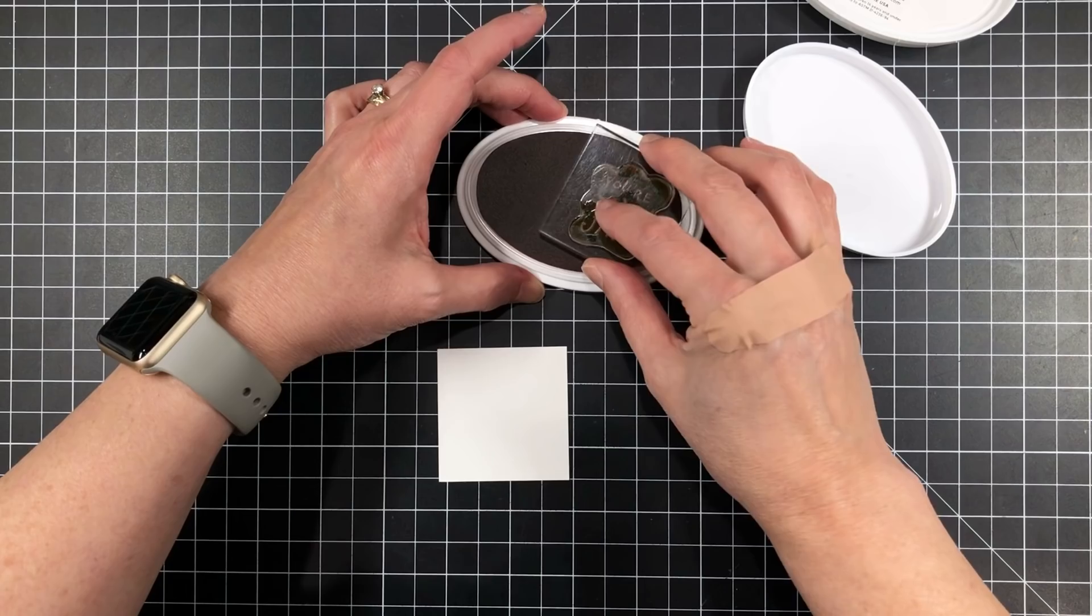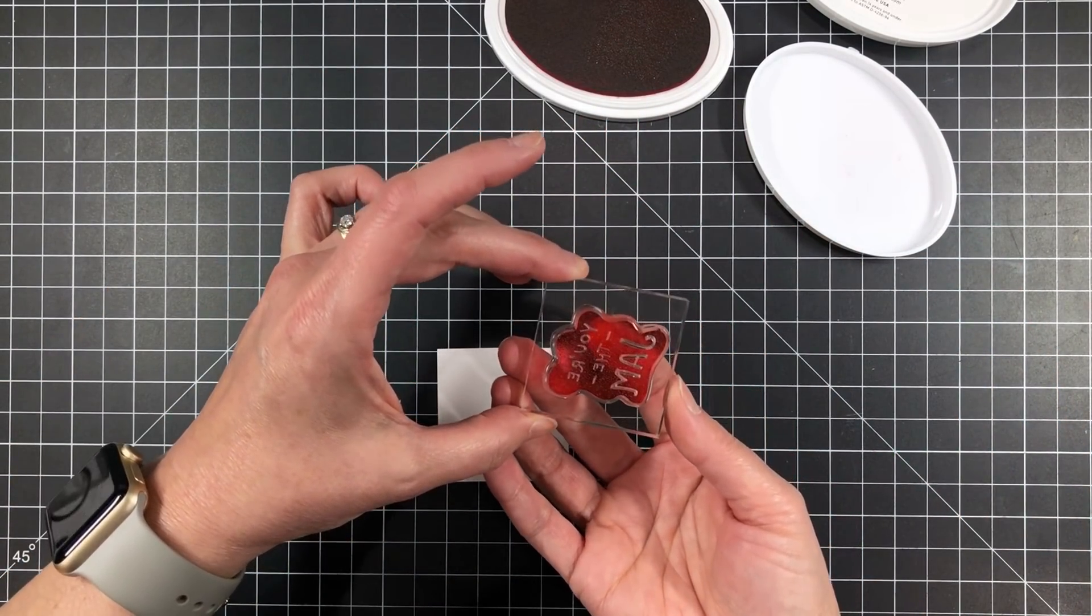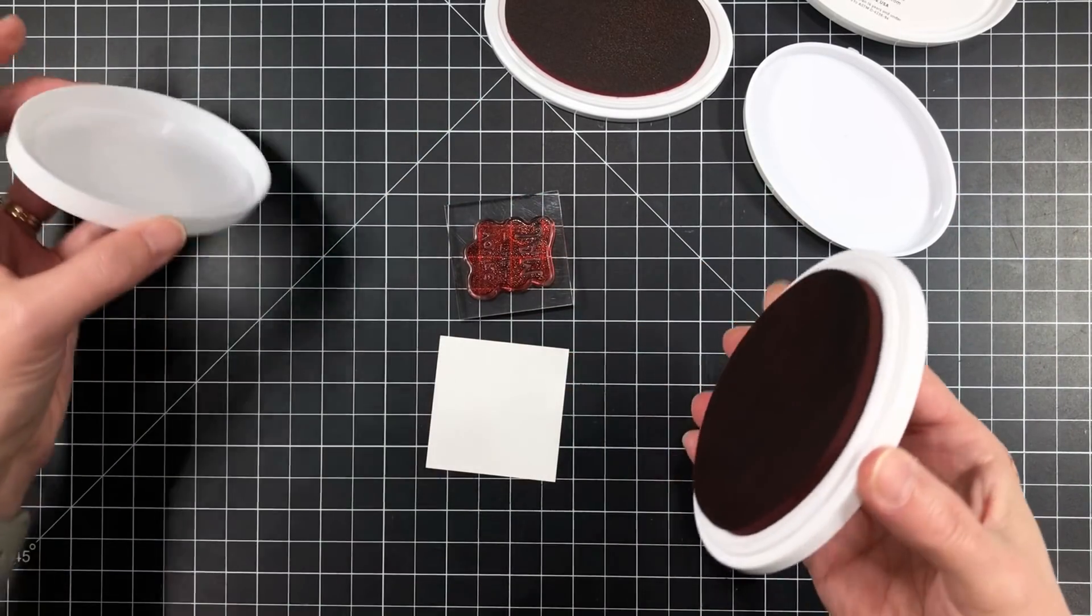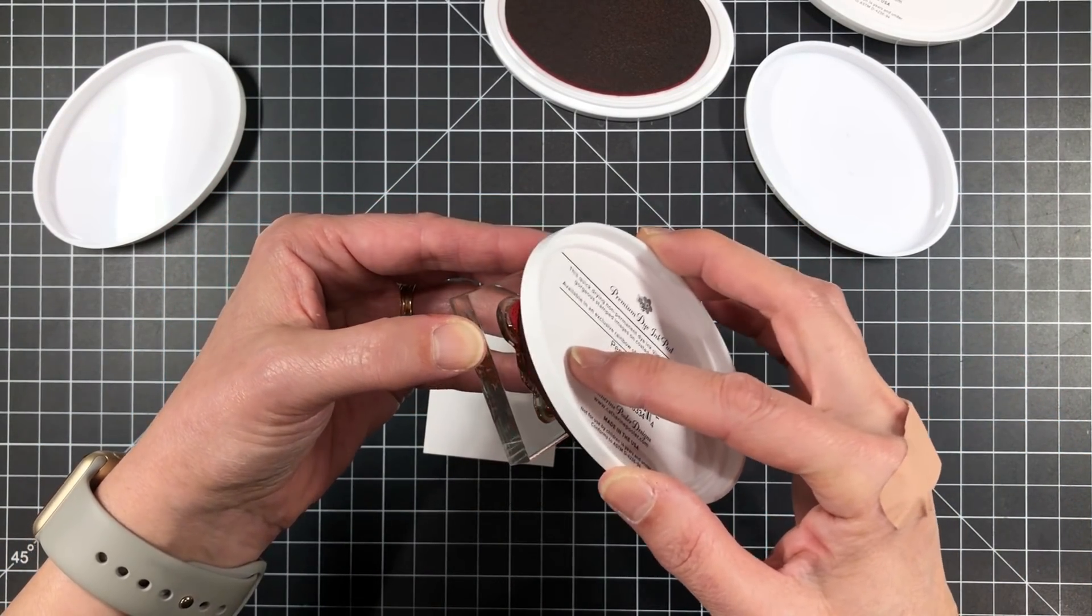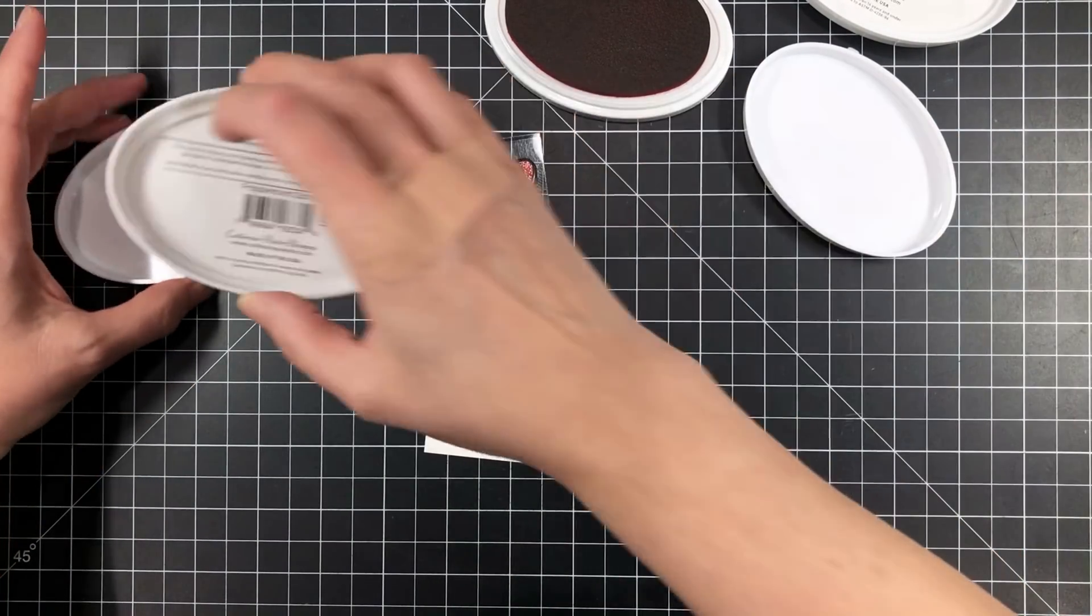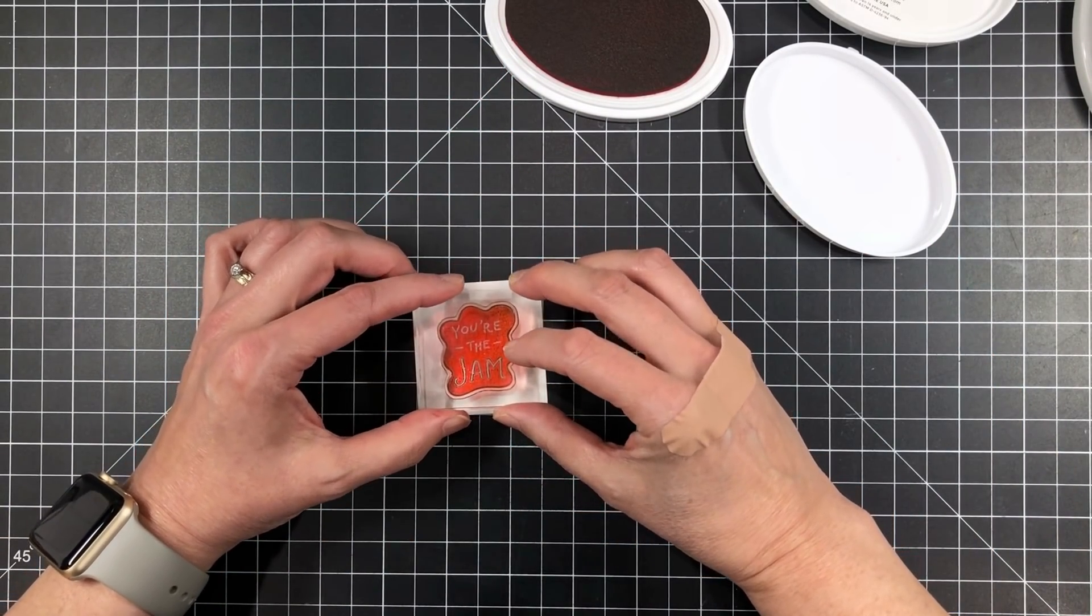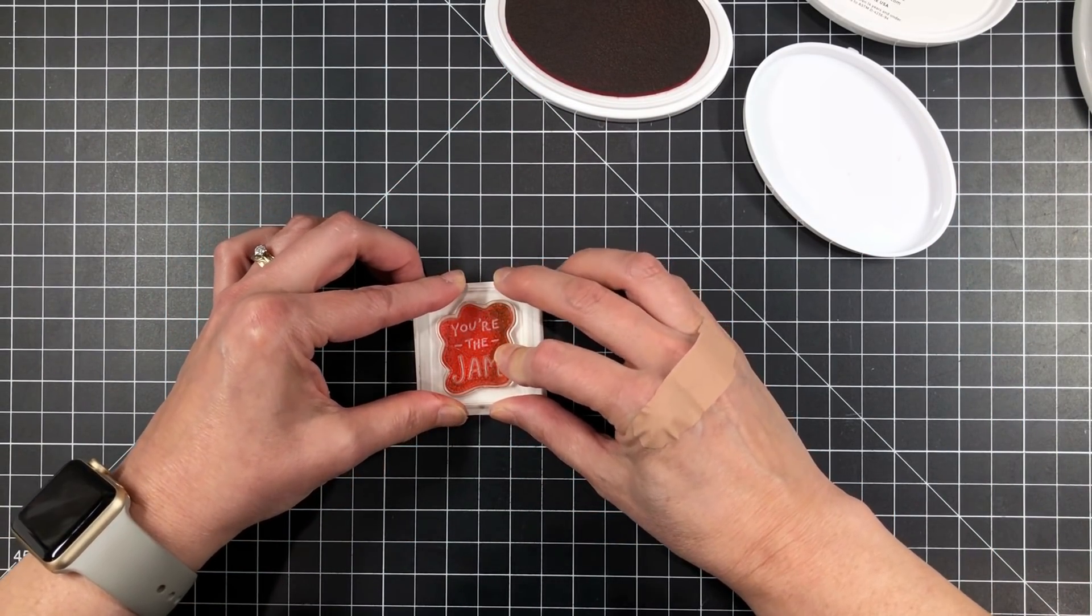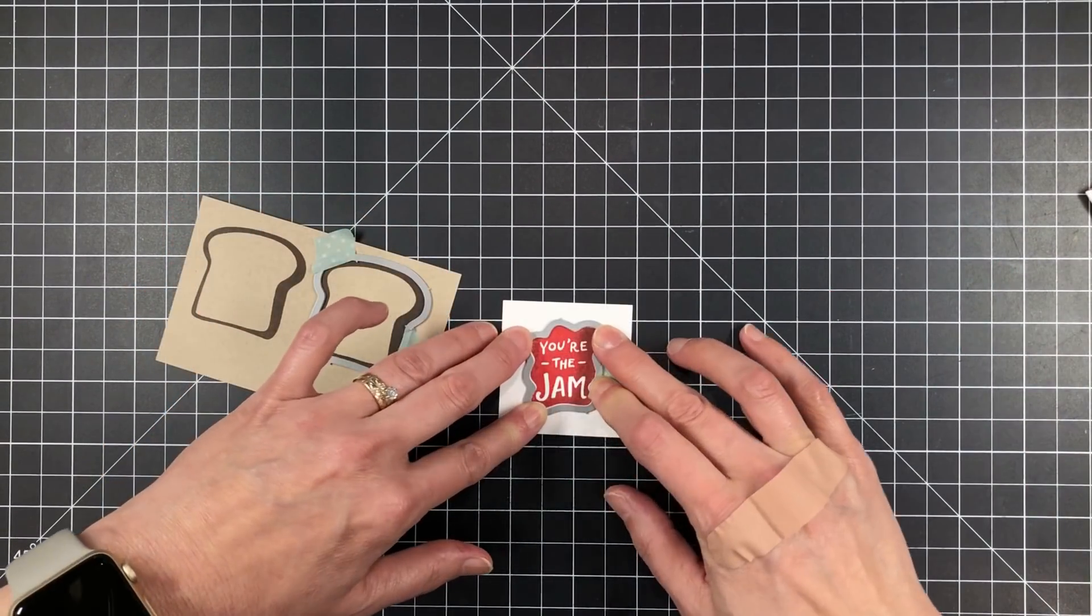I'm going to ink up the jam image with some Rockin' Red. And then I decided I wanted to have some shading. So I'm going to grab Peppermint Scrub, which is a deeper, richer, like almost cranberry colored red. And I'm just going to angle it so I'm inking up a portion of the image along the edges there, not the whole thing. So then I get this really nice gradation of color across the whole image. But isn't that coverage great? I absolutely love that.